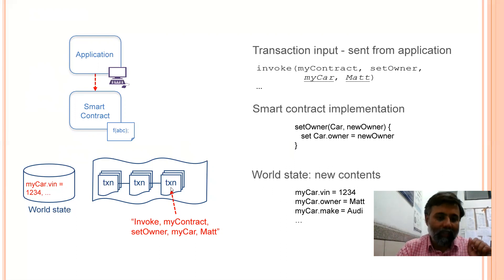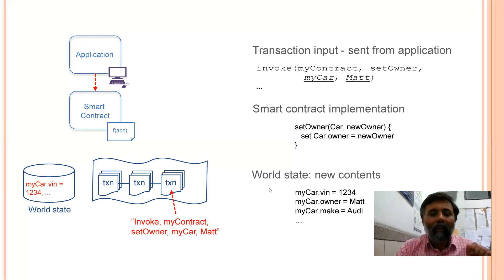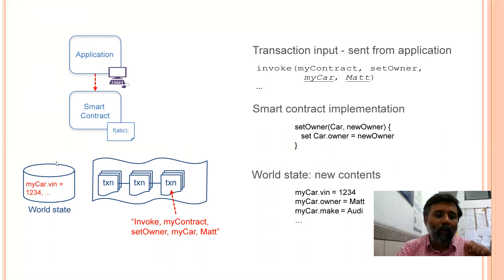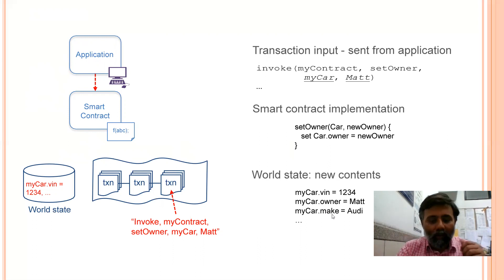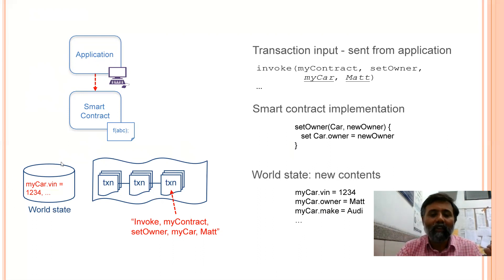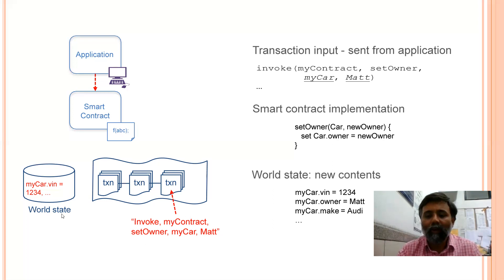So 'invoke my contract set owner my car' is stored in the form of a transaction in the blockchain in immutable fashion. But when we look at the current state — when this value is set — the corresponding input-output data is stored in the world state. You can see 'my car dot owner' is a field, and this is like a serial number identifying who is the owner or manufacturer of this car. Several fields can be stored in the world state, while the transaction itself is stored in the immutable blockchain.